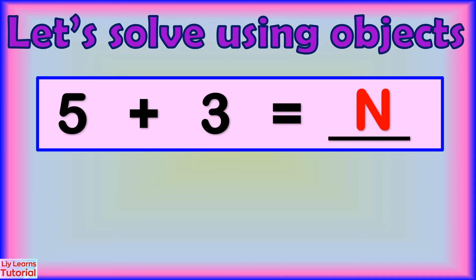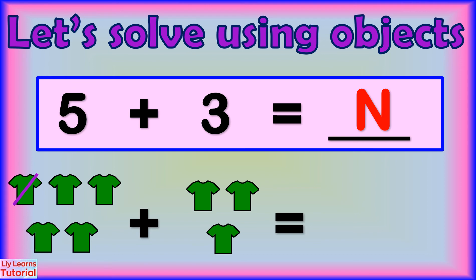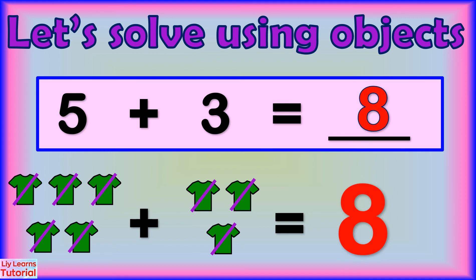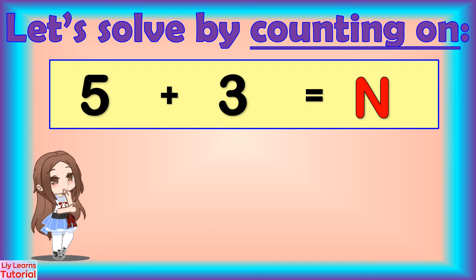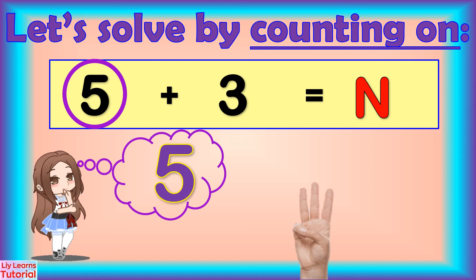Now we solve the number sentence using objects. Five plus three equals — one, two, three, four, five, six, seven, eight. Eight! You can also solve this by counting on. Five is the bigger number, so let's put five in our head and three on our fingers: five, six, seven, eight. Five plus three equals eight.